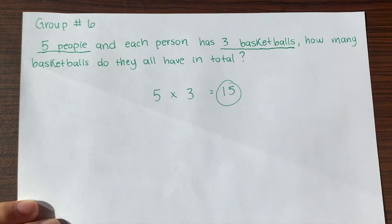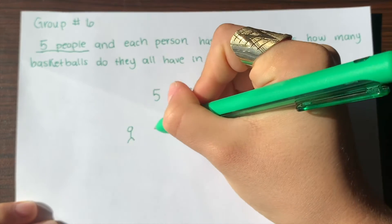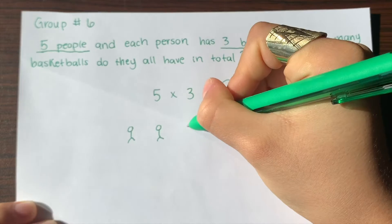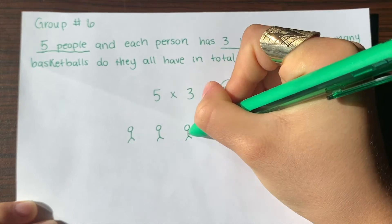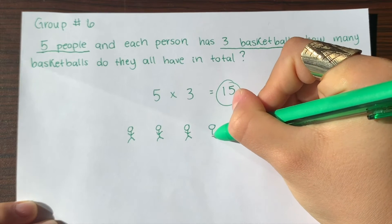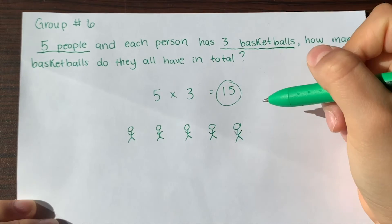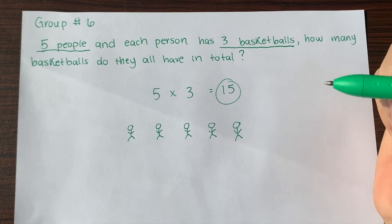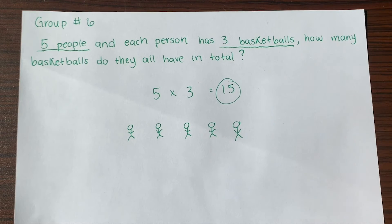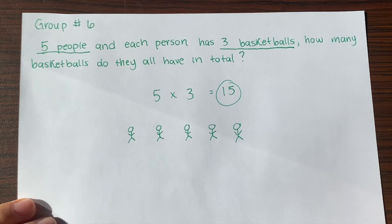Another easy way until you get comfortable with multiplication is you can do a drawing. So let's say we have five people, right? My little stick figures here. This is just if you're not that comfortable with multiplication, you can do little drawings to figure out the problem. So there's five people.